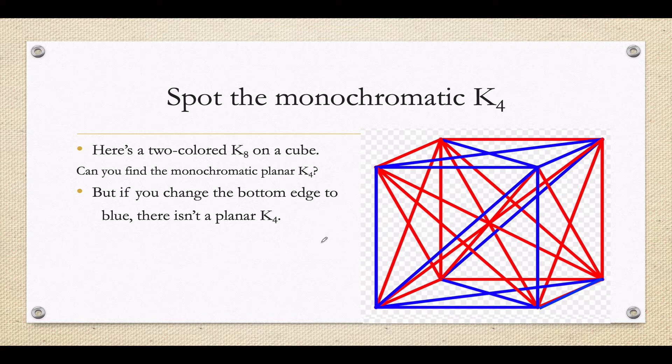An example showing that it's possible to have a complete graph on eight vertices, a two-colored complete graph on eight vertices, that does not contain a monochromatic K4. Check it. Try to find one. You won't be able to find one.